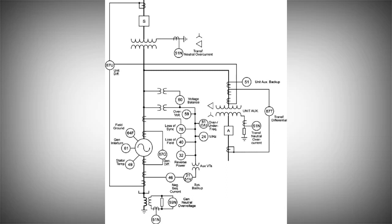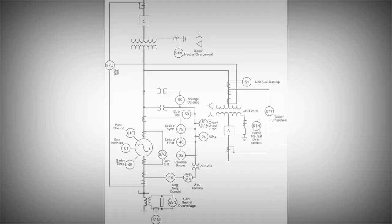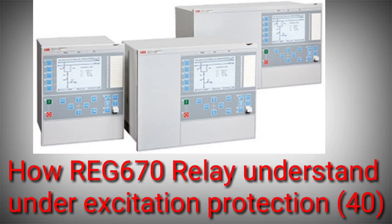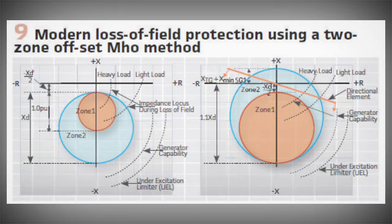So, that is the generator protection relay. How do you understand under-excitation protection? For example, the REG670 relay — under-excitation protection is the protection relay. Under-excitation protection is an impedance-based protection. So, what do we do?